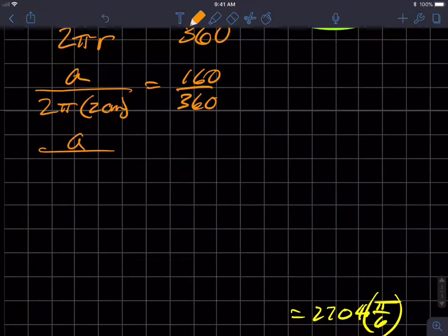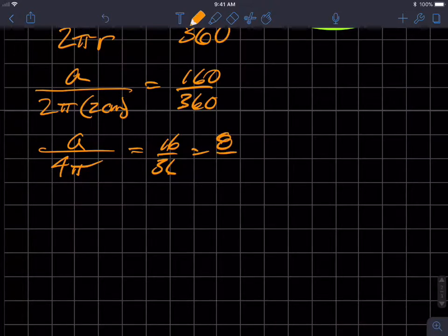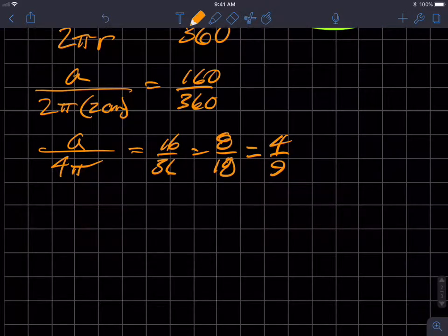This becomes a over 4π and that equals 16 over 36, which is eight over 18, which is four over nine. And then I'm going to multiply both sides by 4π.